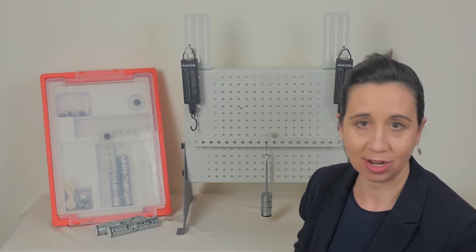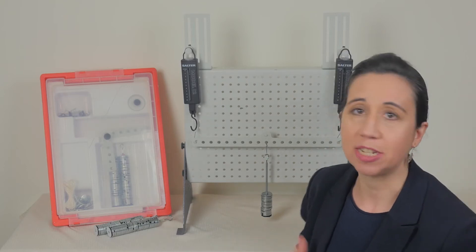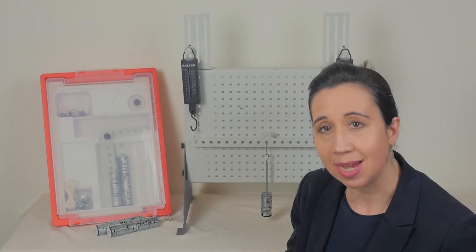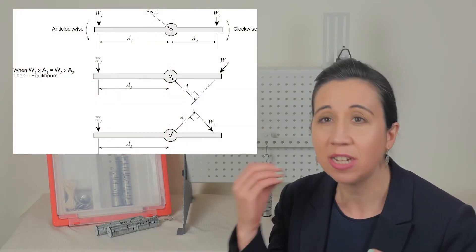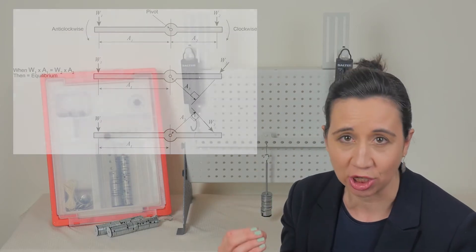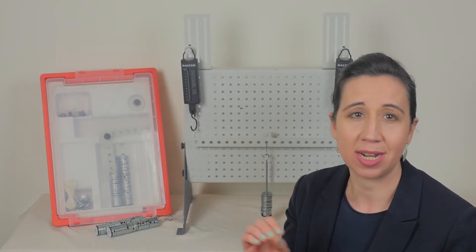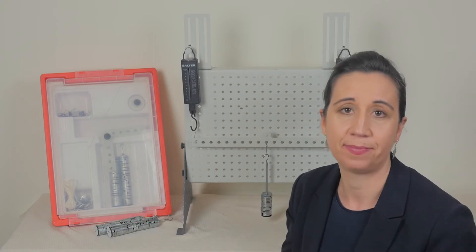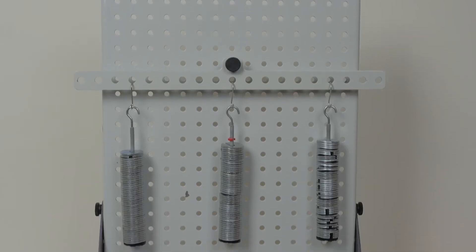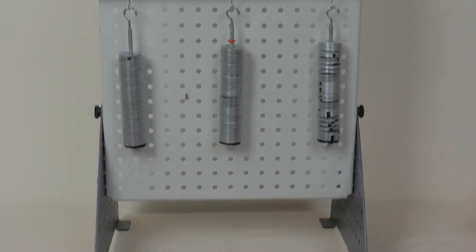Let's do the principles of moments experiment. At the core of this kit is the concept that when forces act on a body creating turning effects in opposite directions, they will not turn the body if the total turning moments in each direction are equal. I set up the beam on the separately supplied work panel in portrait position.